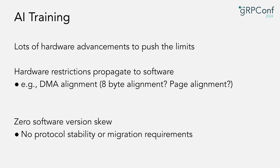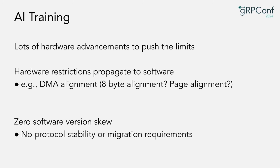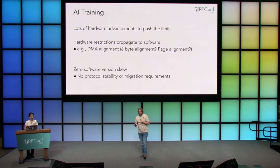As people try to squeeze more out of their workloads and machines, there have been hardware advancements pushing things to the limit, and some of those propagate all the way to software. For example, zero-copy techniques can reduce the cost of RPCs and limit needless operations. But when you're talking about hardware, you might talk about DMA alignment — eight-byte alignment or even page-aligned — which is very abnormal, new territory for gRPC.